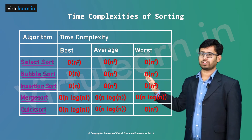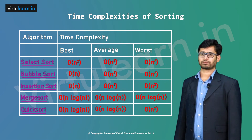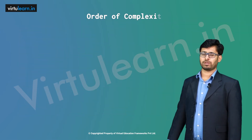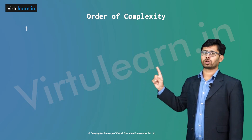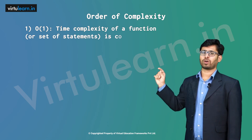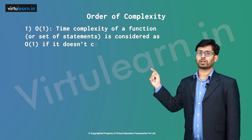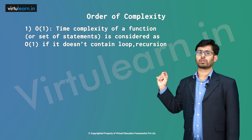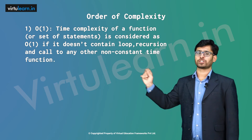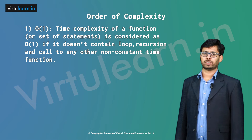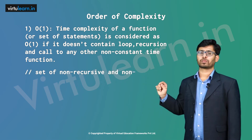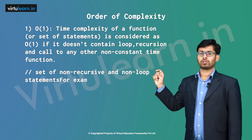Now let us see the order of complexity. The first one is O(1). The time complexity of a function is considered O(1) if it does not contain a loop, recursion, or call to any other non-constant time function — that is, a set of non-recursive and non-loop statements. For example, a swap function.